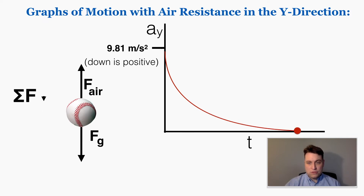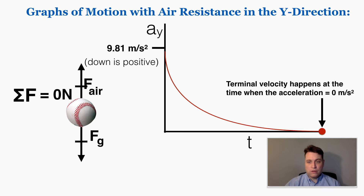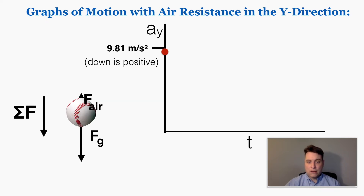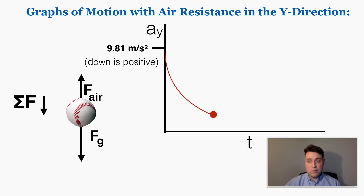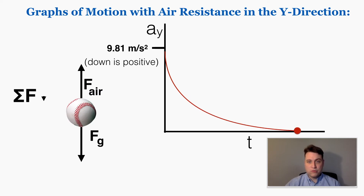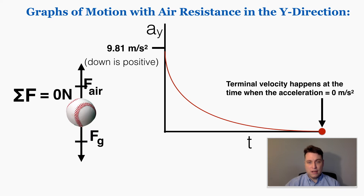This continues until the acceleration finally becomes zero — where air resistance balances out the force of gravity. When this happens, this is terminal velocity. The ball is moving at its fastest possible velocity and can't get any faster because the acceleration is zero and the forces are balanced. That point at the end of the acceleration graph is where terminal velocity occurs.